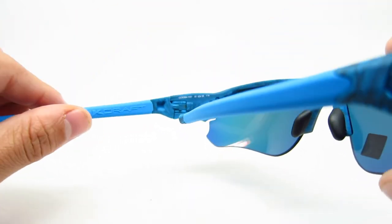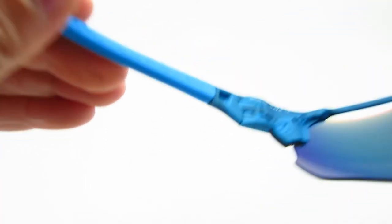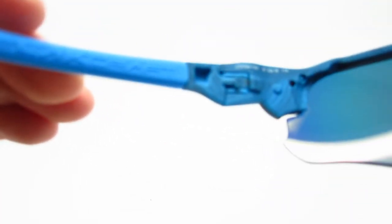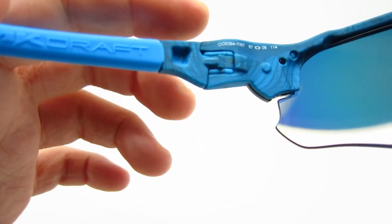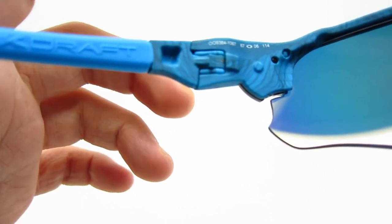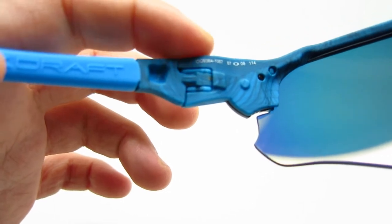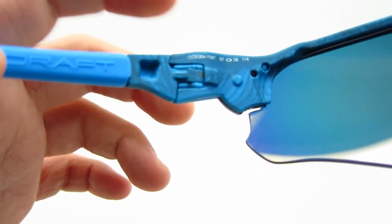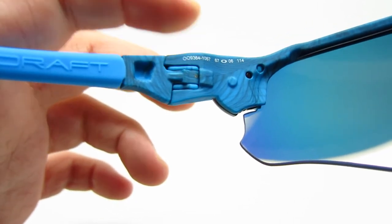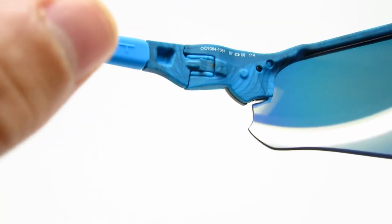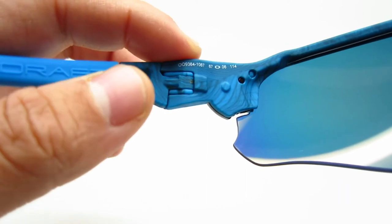So the codes on these are 009364, that's the model number. Then it will say dash 1067. Technically the color code is the 10. The 67 is the lens size, but they put 1067.